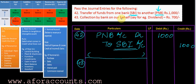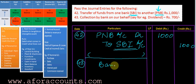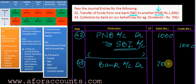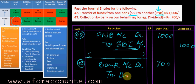Entry for collection by bank on our behalf — example: dividend 7000. With the help of dividend, the bank balance is increasing, so bank account debit 7000. It is increasing because of dividend, and dividend being my income is credited.